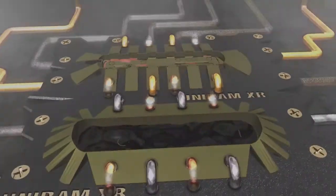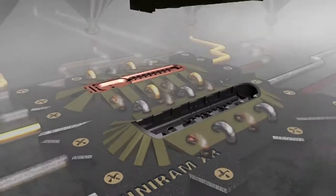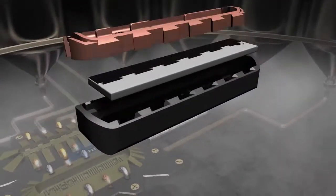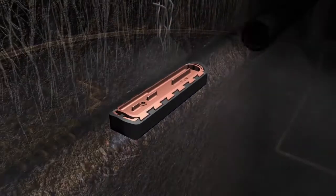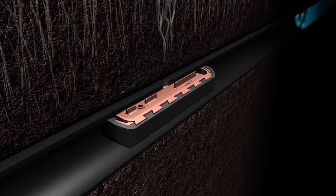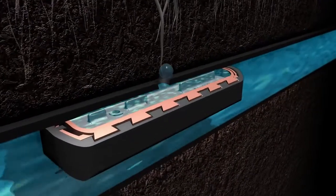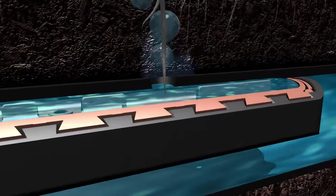As the only dripper line that infuses copper oxide directly into the mold of each emitter, UNIRAM XR deters even the most aggressive roots with protection that extends beyond the initial entry point and throughout the entire emitter.